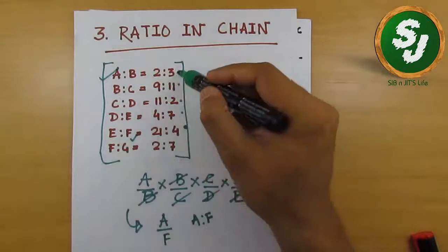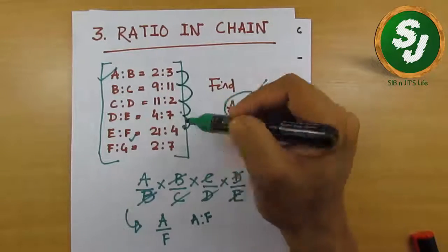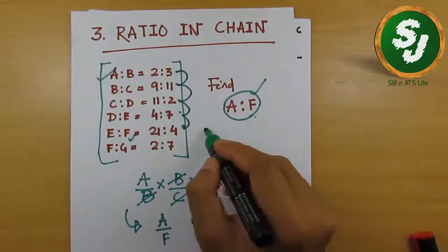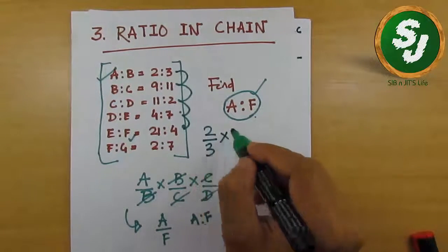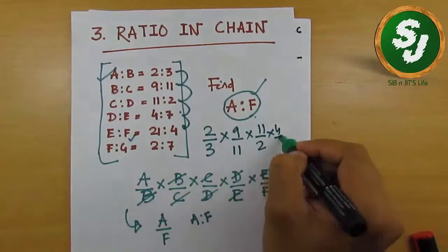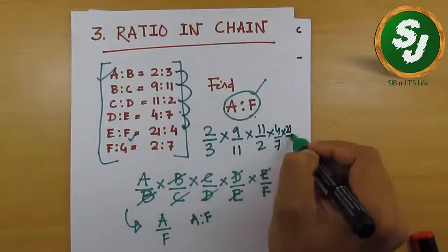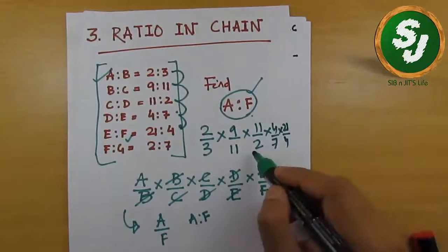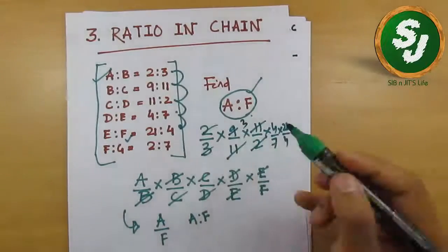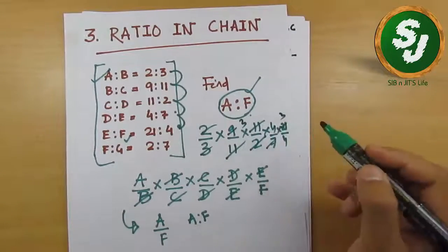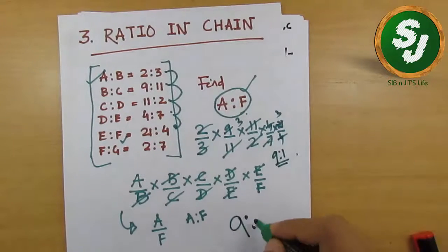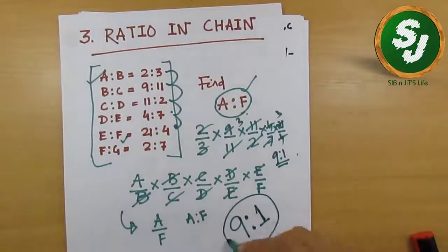Multiply directly: 2/3 × 9/11 × 11/2 × 4/7 × 21/4. Whatever the answer comes, that's the answer. 11-11 cancel, 3-9 is 3, 7 cancels 3, 4-4 is cancelled. So this is 9:1, your answer. So 9:1 is the answer to A:F.